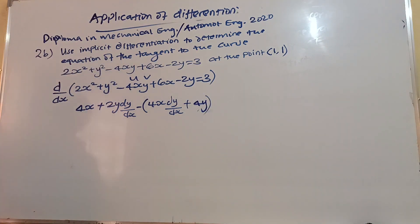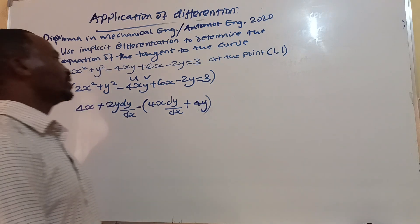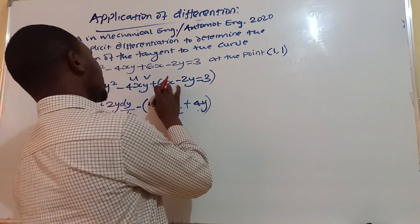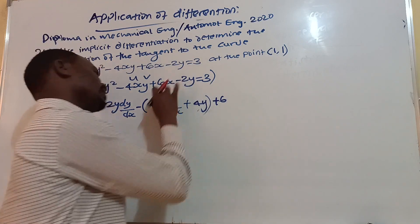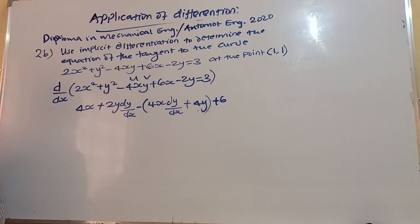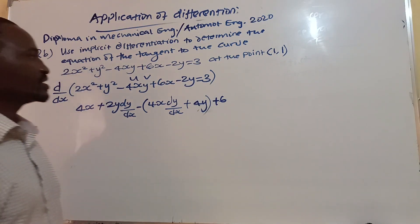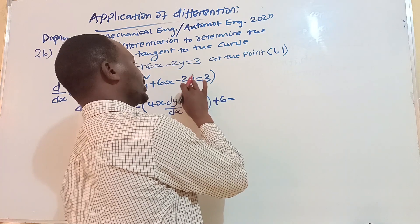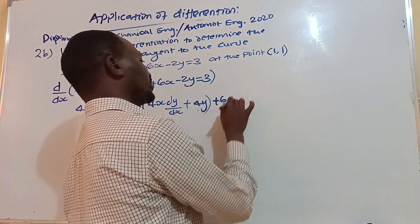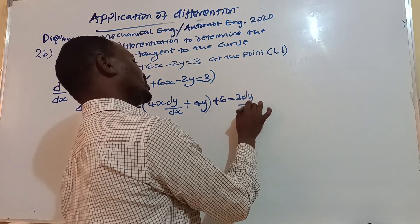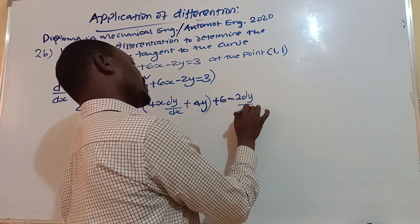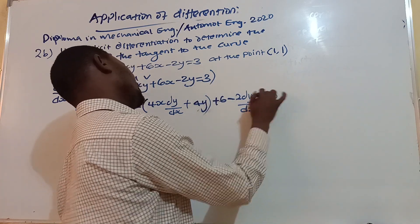So the product rule on 4xy gives 4x dy/dx plus 4y. Differentiating 6x gives 6. Differentiating 2y gives 2 dy/dx. Differentiating the constant 3 gives 0.